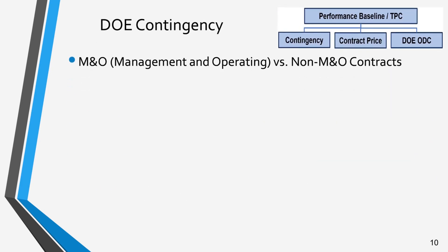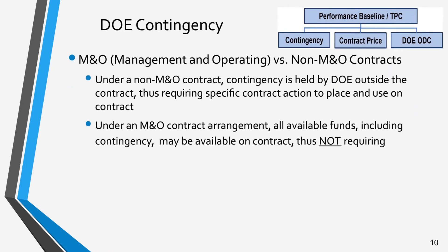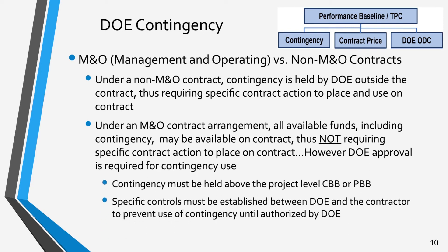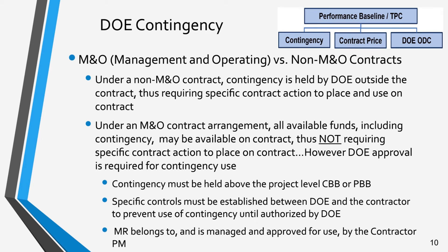The requirements of MR, contingency, budget, and funds must be consistently established and followed. The process is very similar whether the project is executed under either an MNO or non-MNO contract, even though significant differences may exist in contract funding mechanisms between MNO and non-MNO contracts. For example, while under a non-MNO contract, contingency is held by DOE outside the contract and specific contract action must be taken to place and use contingency on contract.